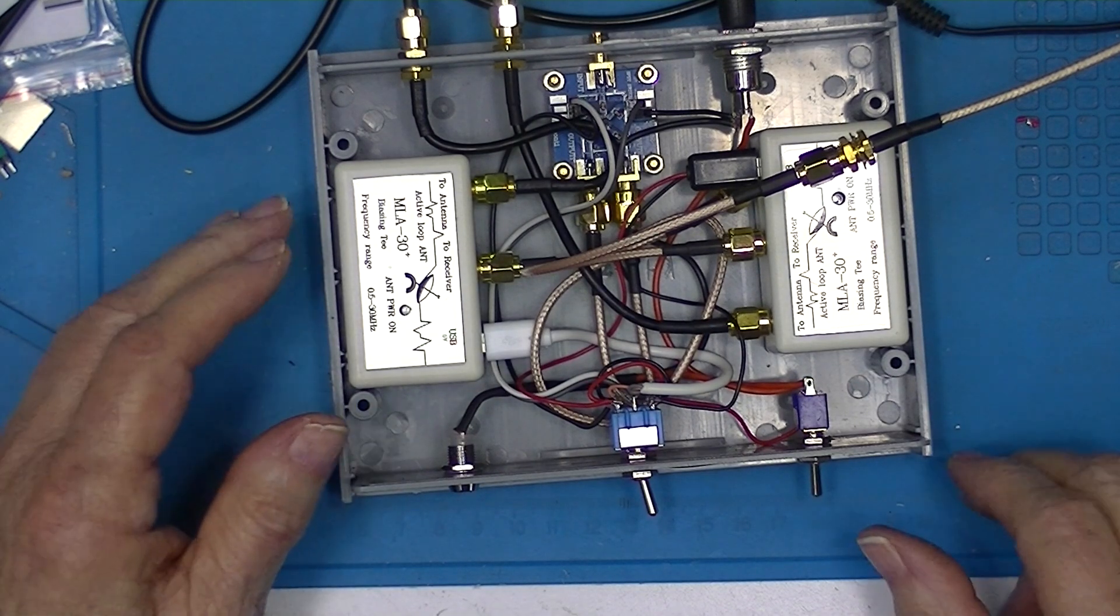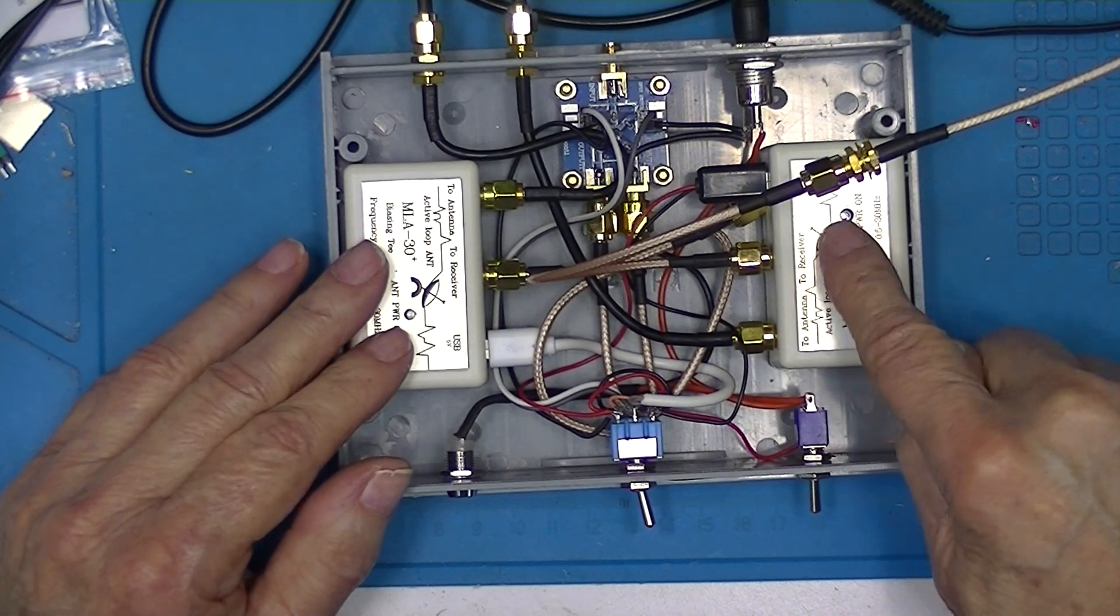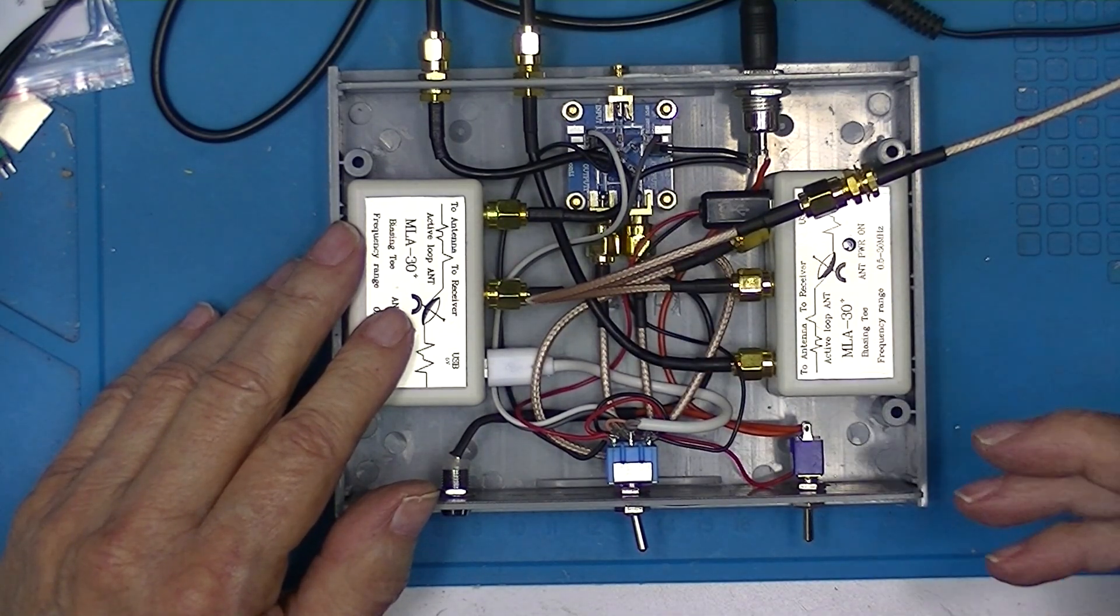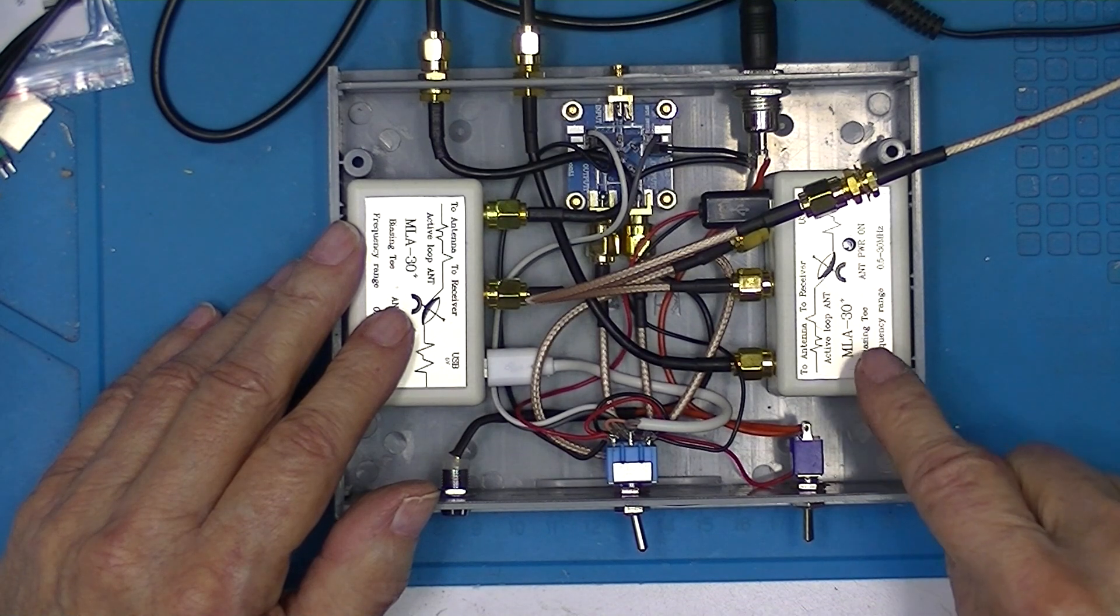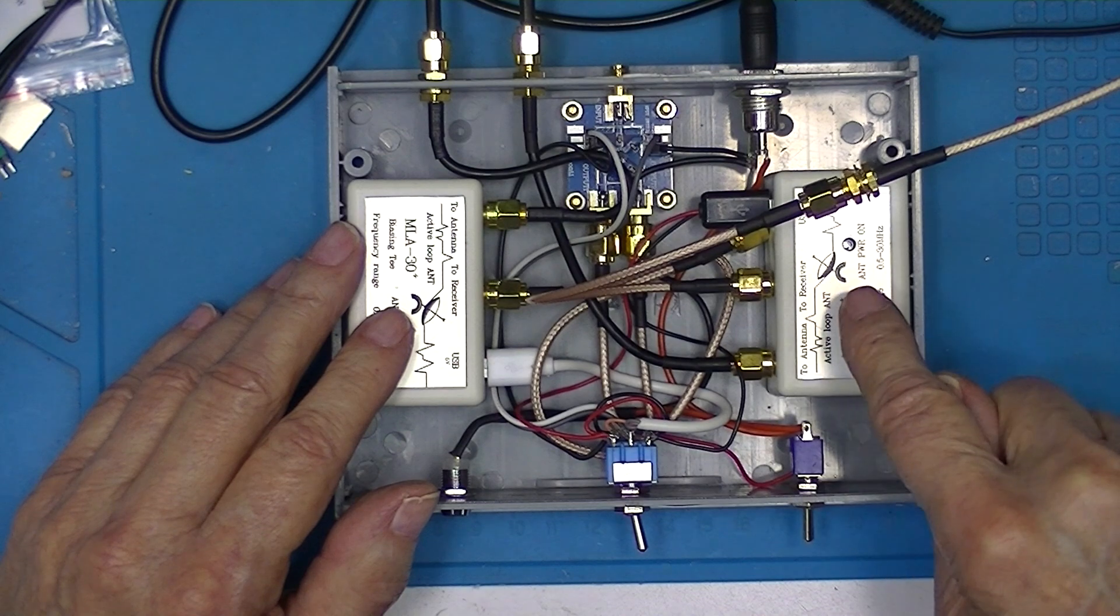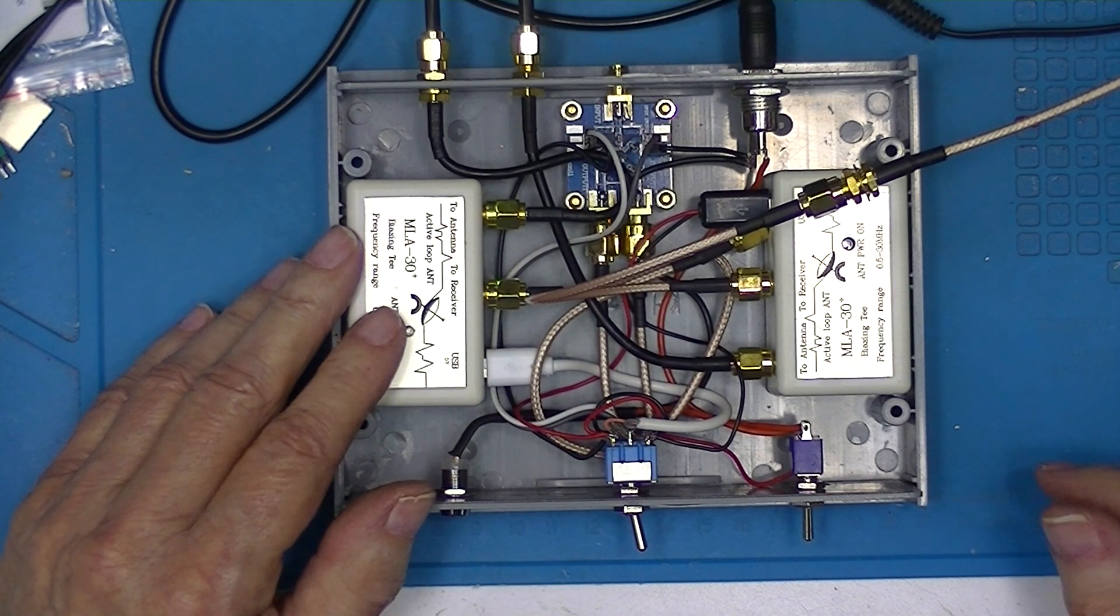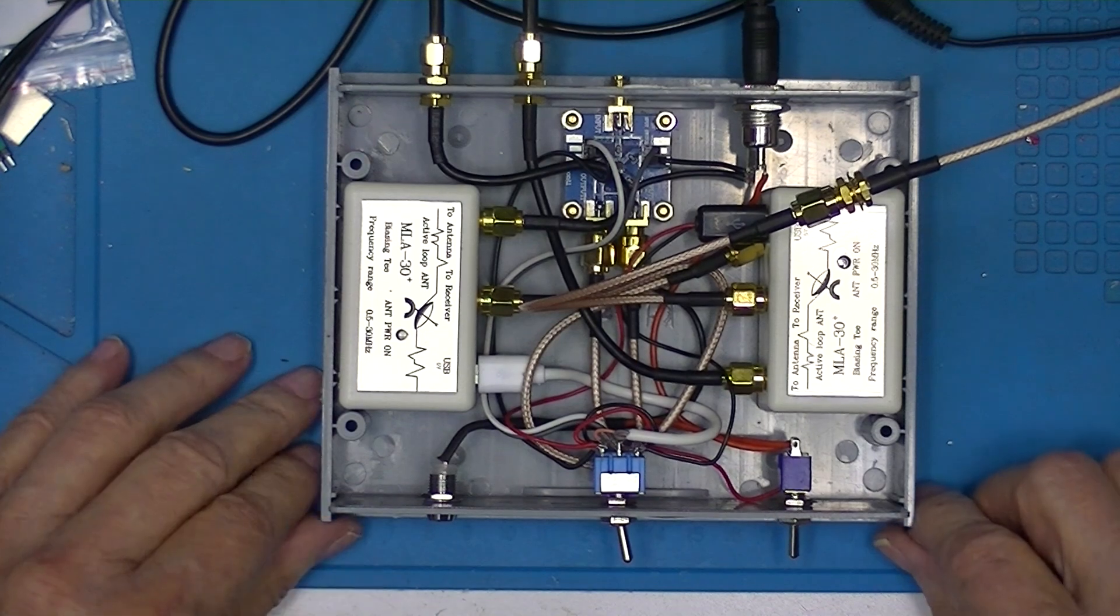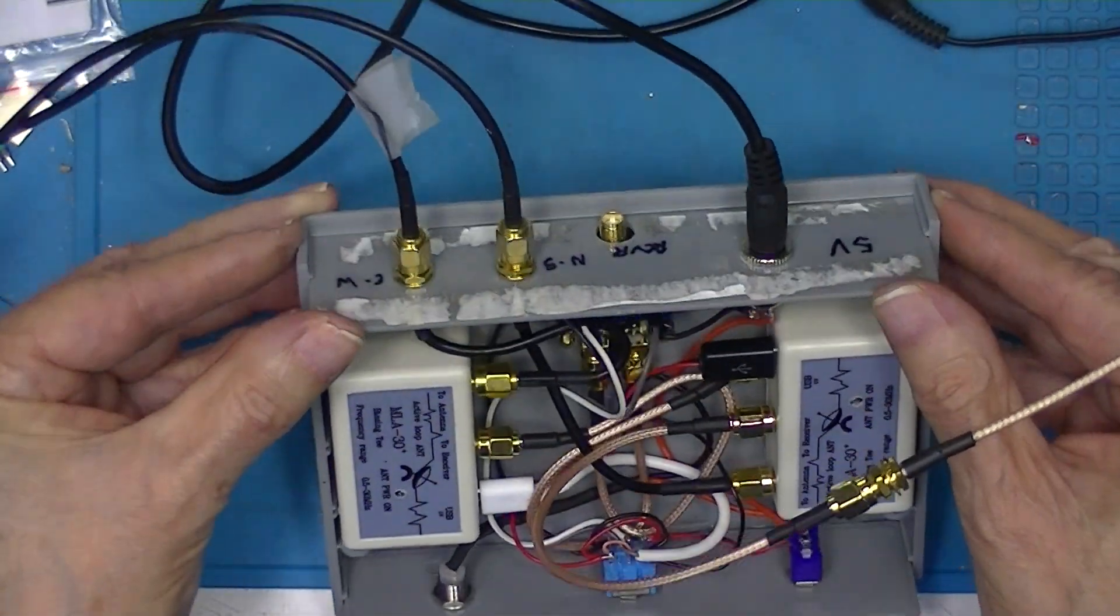I have the receiver hooked directly to this bias T, bypassing this little switching device. I put in the Aliexpress switch. I've received nothing in the receiver through either of these switches, but if I hook the antenna directly to the bias T, I get a usable signal - not a great signal, but now it's 4:30 PM Eastern time in my location in Altoona, Pennsylvania. WBCQ is on 7.49 megahertz and right now I'm using the north-south antenna.